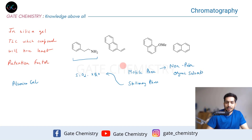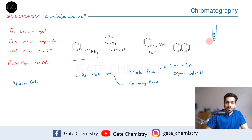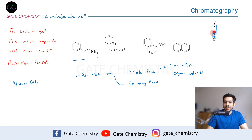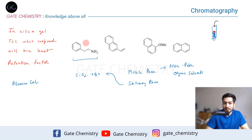Imagine a system where you add a lot of silica, and on top of that you add your compound mixture. Chromatography is generally used to separate or purify a mixture of compounds. Let's say this mixture has two compounds: an aromatic amine and naphthalene. Both of them will travel at different speeds when you add the organic solvent — the mobile phase.